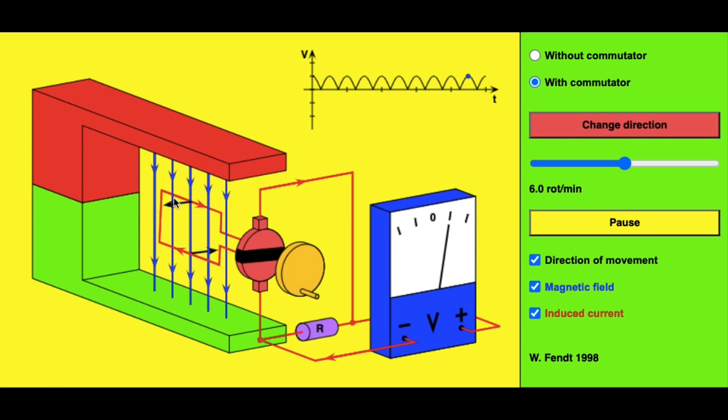Of the coil that the current in that coil changes direction every 180 degrees. So we use a split ring commutator to convert the alternating current in the internal circuit into direct current in the external circuit.